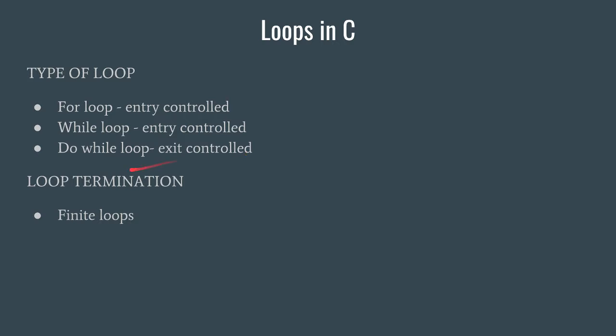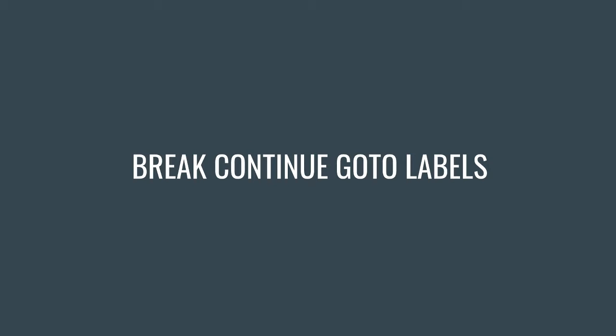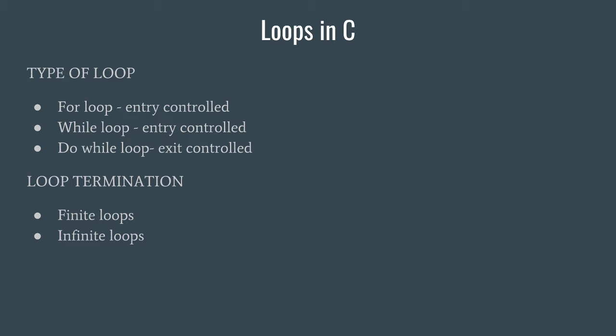Now we have loop termination. Loops are of two types: finite loops, which terminate after executing for a certain amount of time, and infinite loops, which never end. That is more or less what we will discuss in this video — let us get started with the code.